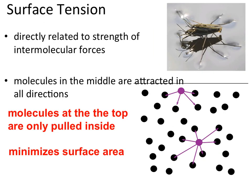Surface tension is another feature of liquids directly related to intermolecular forces — the stronger the intermolecular forces, the stronger the forces of interaction at the surface of the liquid. Animals such as the bug shown here are able to walk across the surface because the intermolecular forces at the surface of the liquid are stronger than those in the middle. This is because molecules at the surface are interacting with half or fewer surrounding atoms, so the intermolecular forces are spread among fewer molecules and are subsequently stronger.